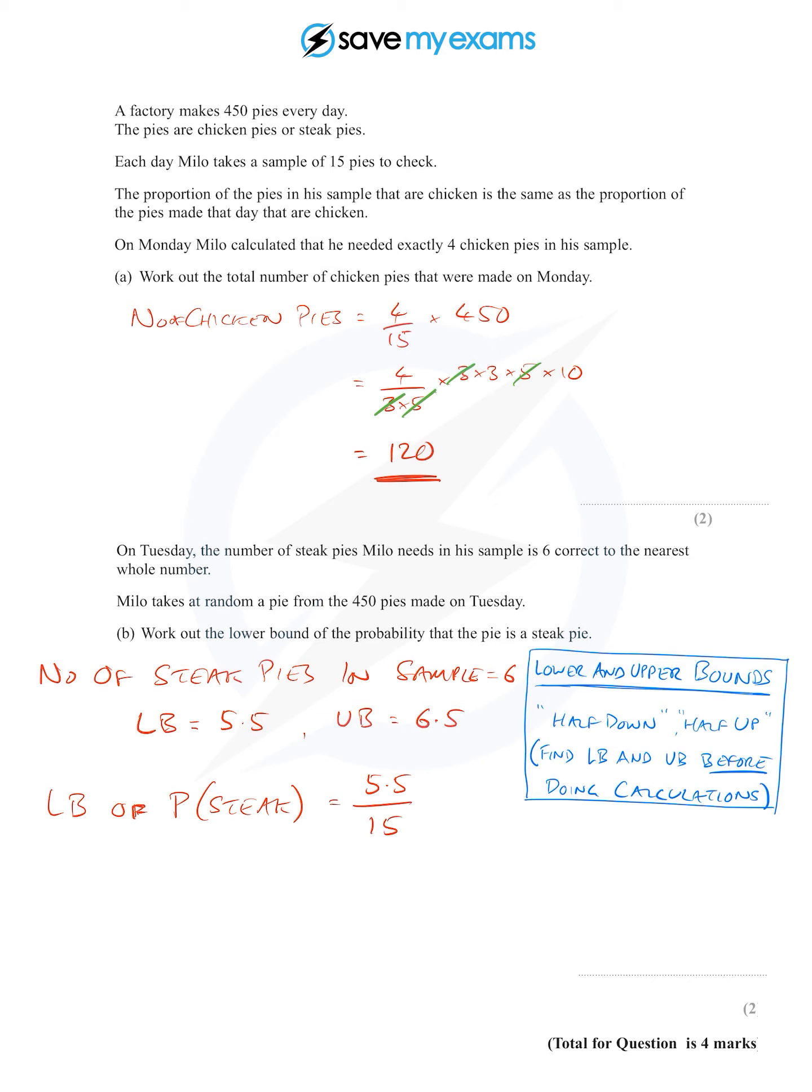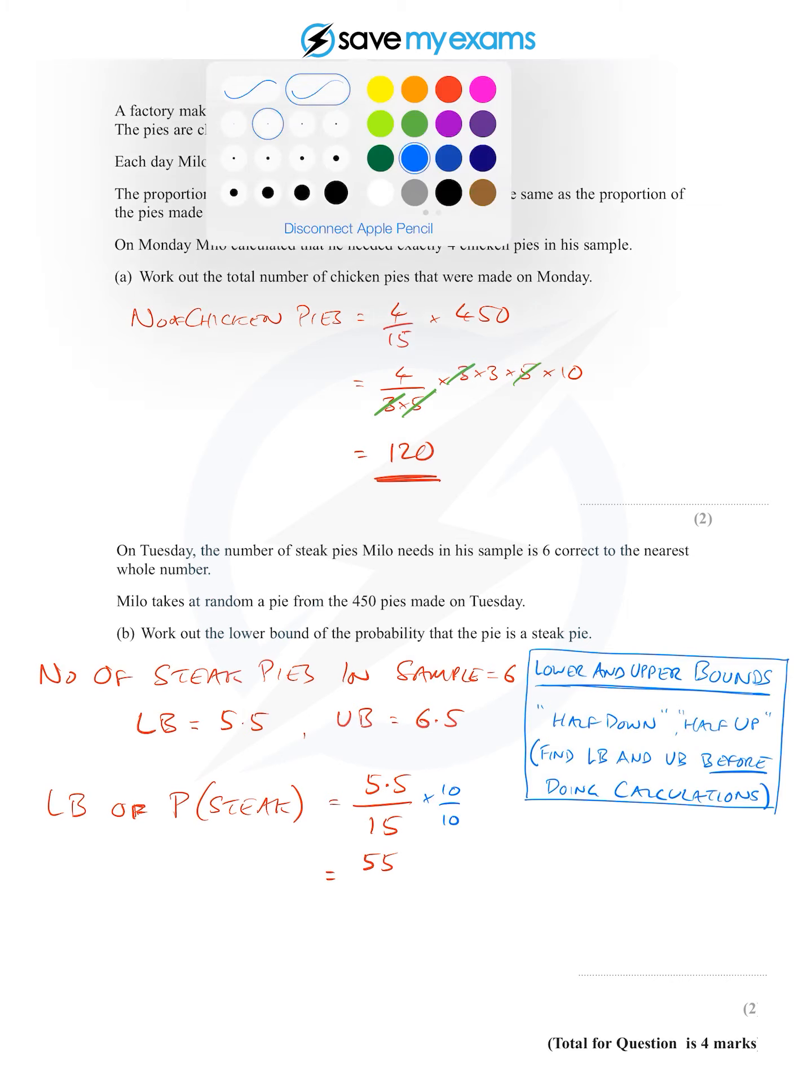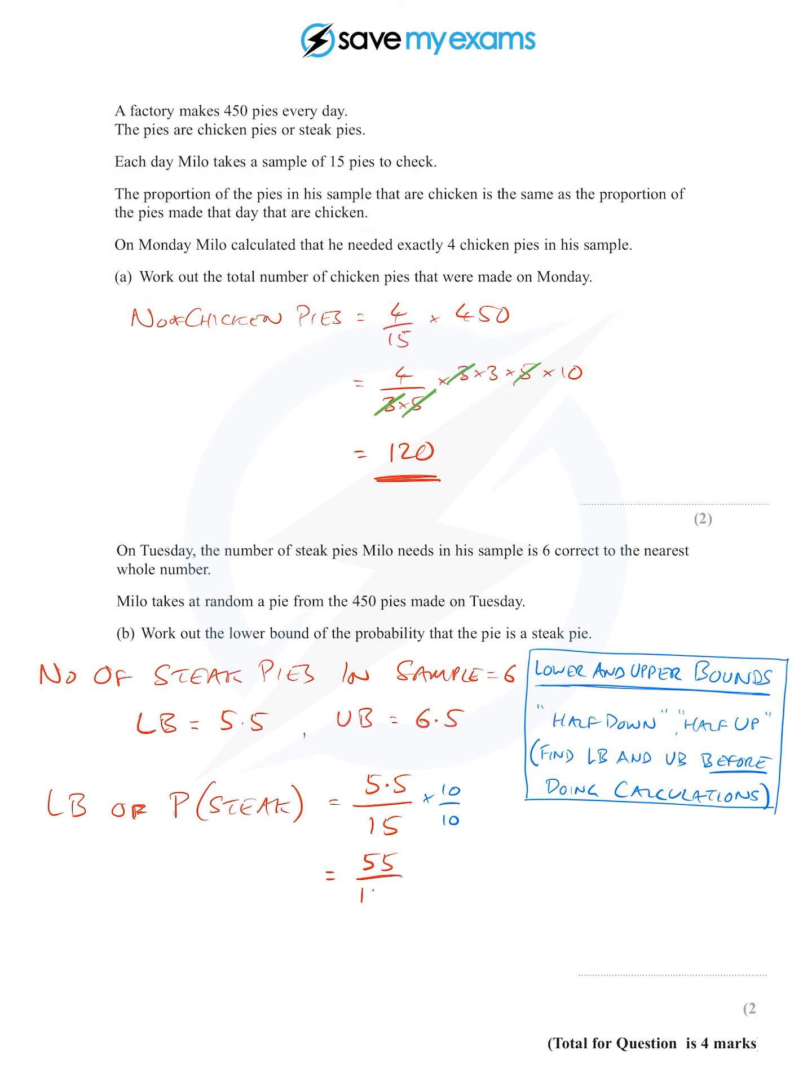First, let's get rid of this decimal point by multiplying the top and bottom by 10. Notice that by multiplying by 10 on the top and bottom, I'm just multiplying by 1, so I haven't changed anything. That's 55 over 150.